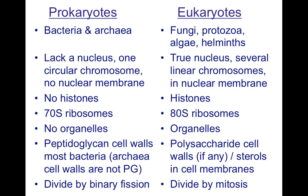There are no histones in prokaryotes, but we eukaryotes do have histones. We are going to go deeper into histones in a future video. Another thing you should know is prokaryotes have a 70S ribosome — I'll explain what that is in a future video — while eukaryotes have an 80S ribosome.